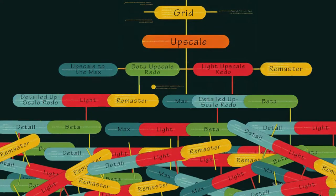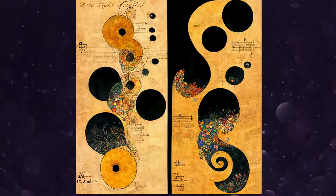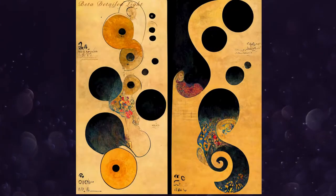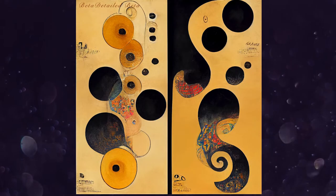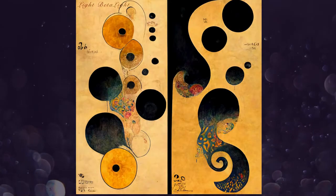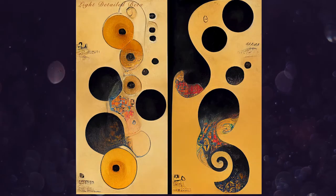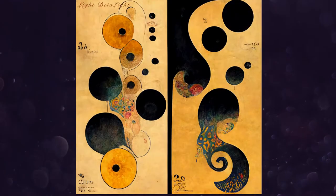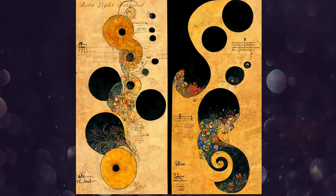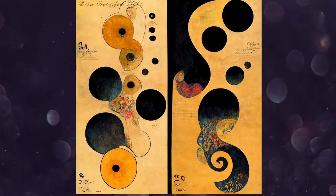The upscale option you choose makes a difference to the final image, but does it make a difference if you send your image through many different upscale options? Does the order matter? I set my image through three different combinations of upscaling options. I did beta upscale redo, then light upscale redo, then upscale to the max. I also did beta upscale, light upscale, then detail upscale.